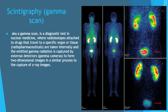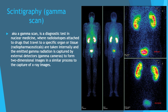Scintigraphy, also known as gamma scan, is a diagnostic test in nuclear medicine where radioisotopes attached to drugs travel to a specific organ or tissue. Radiopharmaceuticals are taken internally and the emitted gamma radiation is captured by external detectors — gamma cameras — to form two-dimensional images. On this scintigraphy film we can see the kidneys, and we can assess the excretory function of the kidney because part of the compound is visible in the urinary bladder.